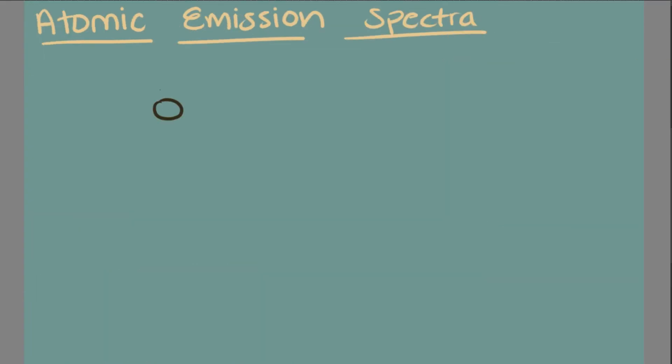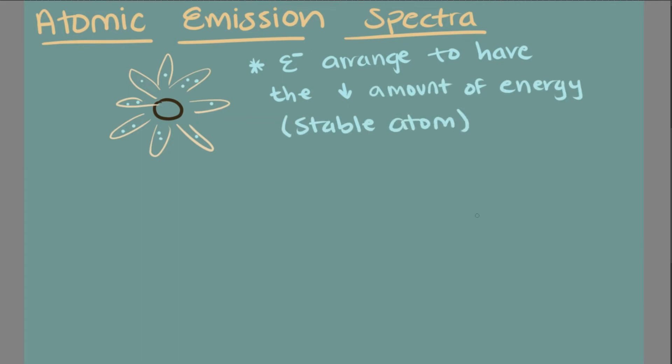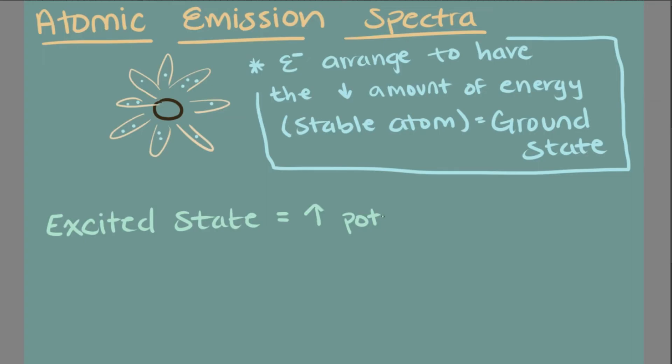Before we look at our last type of decay, let's talk about something called the atomic emission spectra. In an atom, electrons arrange themselves to minimize the atom's energy. The lowest energy state of an atom is known as the ground state. When atoms receive energy, electrons absorb it and shift to higher energy levels. This extra energy in the atom shifts it into an excited state. An atom in an excited state has a higher potential energy than in the ground state, making it unstable.